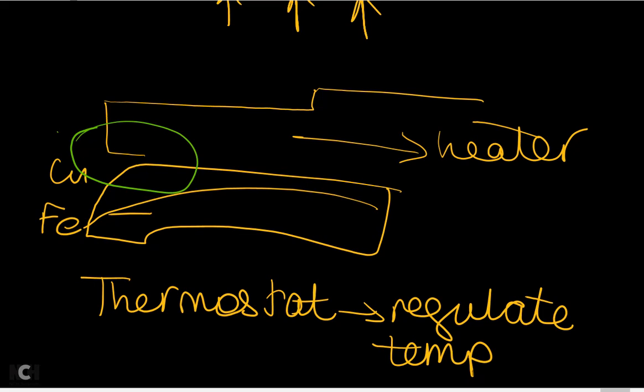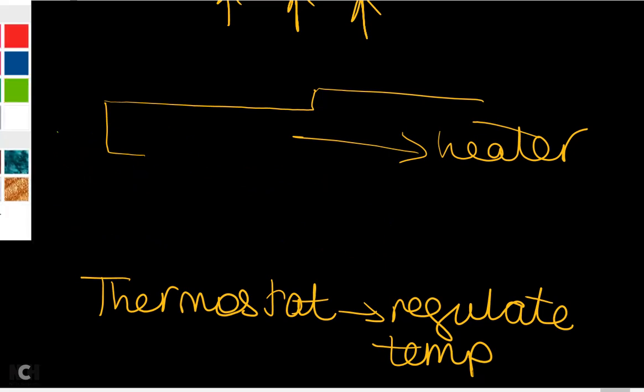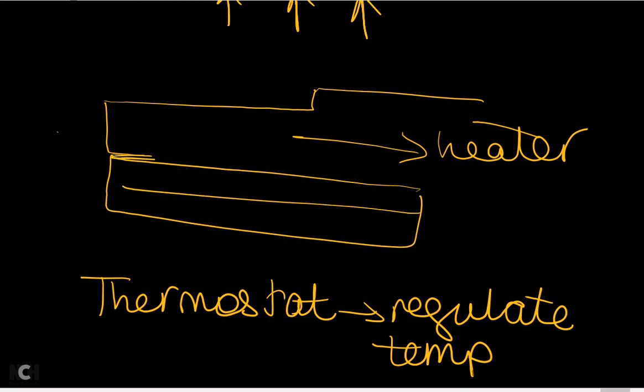When the circuit cools sufficiently, the bimetallic strip straightens and rejoins the contacts, switching the circuit back on. It then gets hot again, bends, and switches off — continuously regulating temperature. If a control knob is added at the bottom, it applies pressure to the strip, adjusting the temperature at which it bends and therefore controlling the temperature setting of the device.